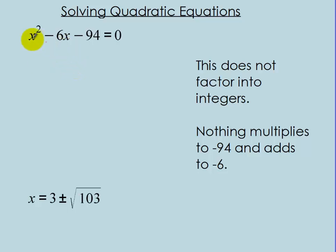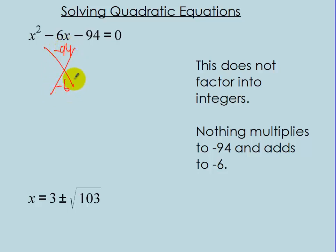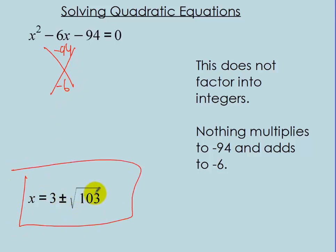We learned how to factor before, but sometimes you just can't use those factoring methods because there aren't any integers that work out. Like for this case, there's nothing that multiplies to 94 and adds to negative 6. Because the solution to that is x equals 3 plus or minus radical 3. So, there are other ways to actually solve these kinds of quadratic equations.